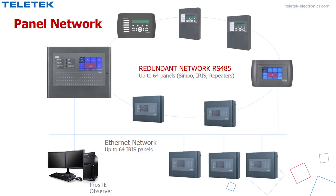It is possible to create a network with up to 64 Iris, Simple, and Repeater panels. For that purpose, the installers can use two connection methods. Via the RS485 redundant network model, you can create a mixed network between Iris, Simple, and Repeater panels.